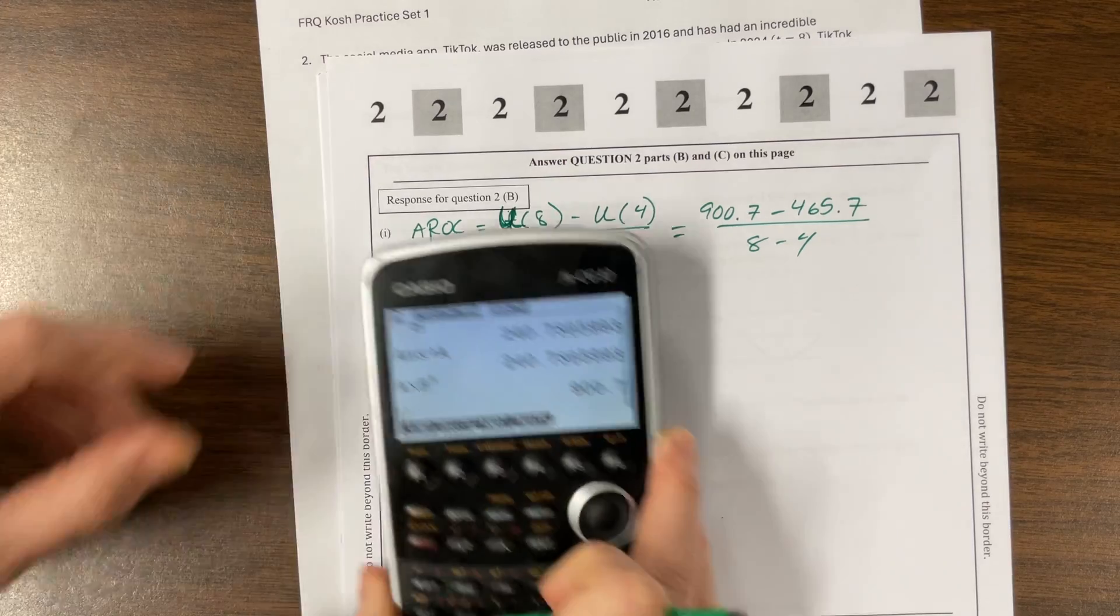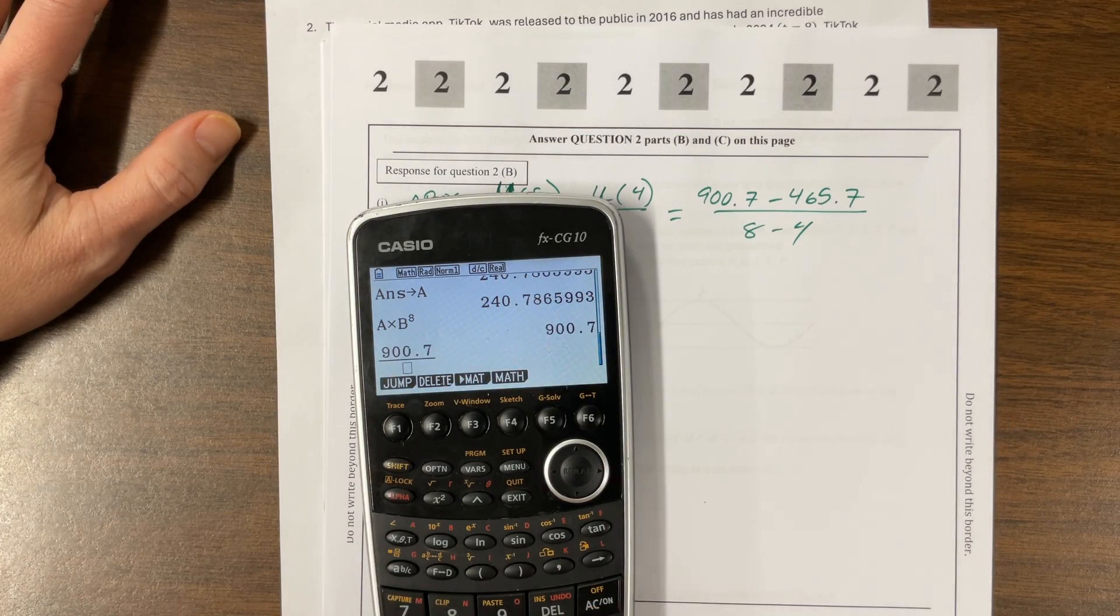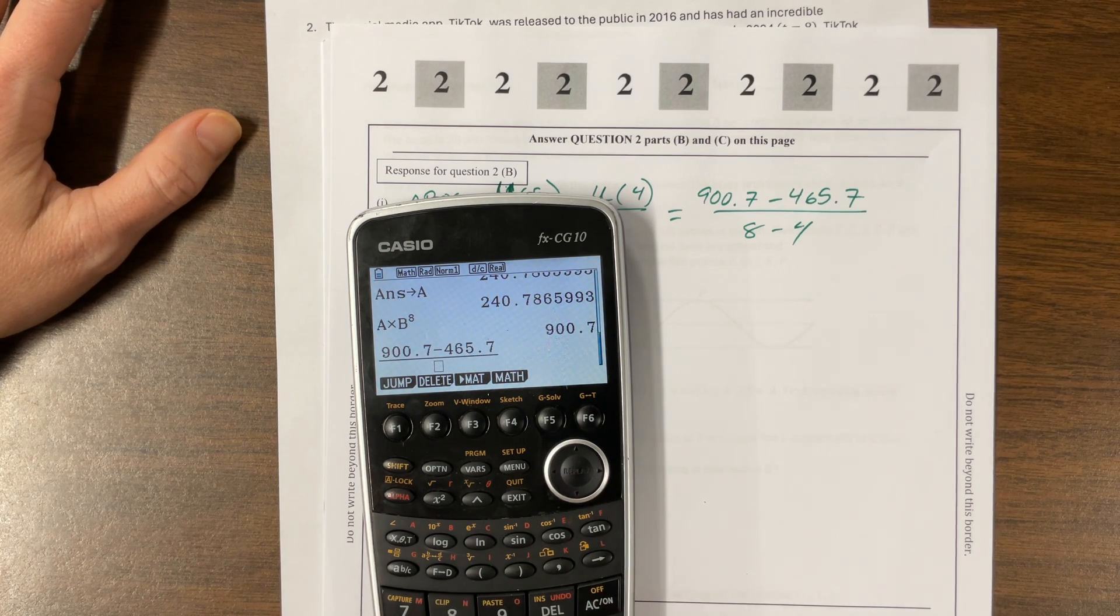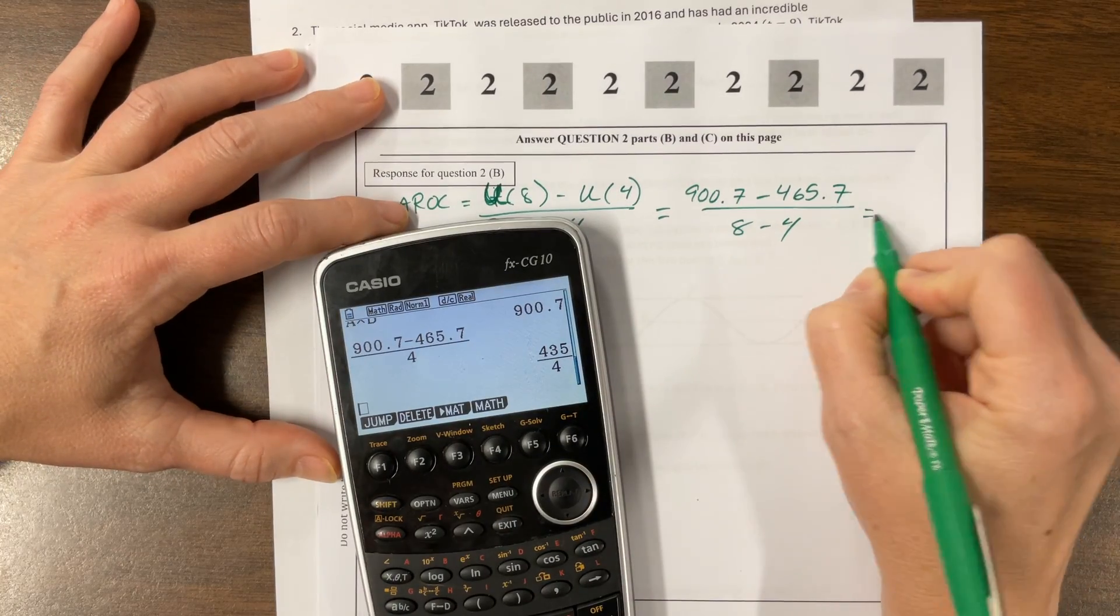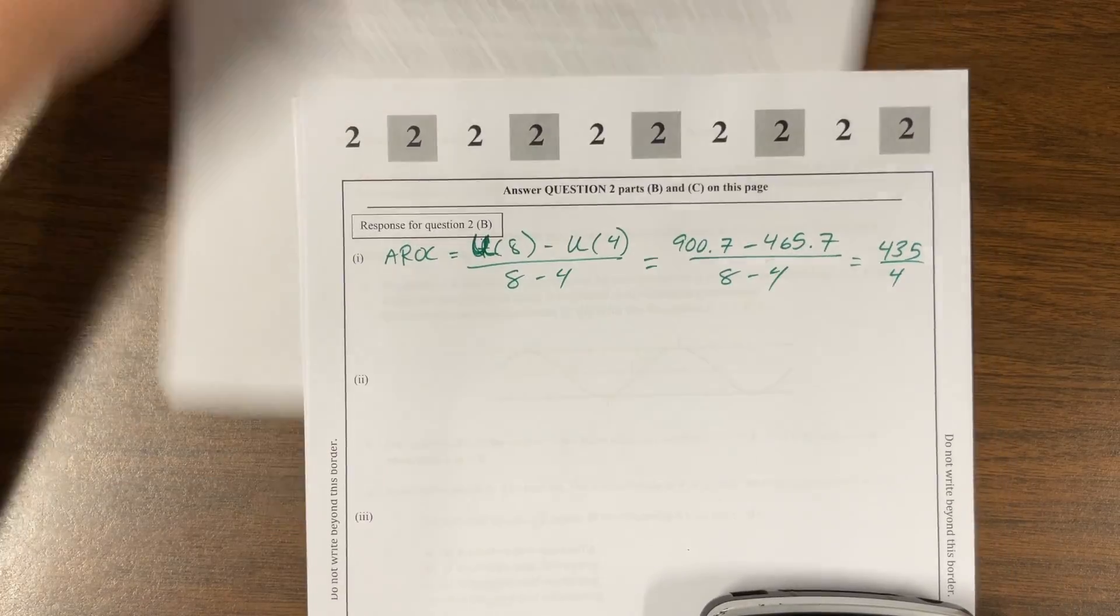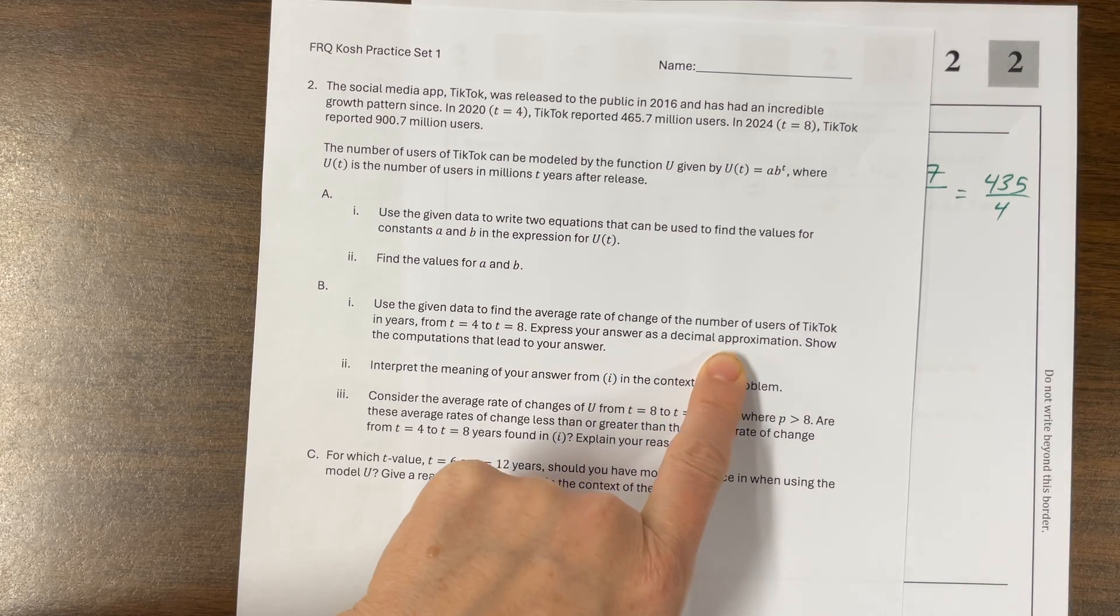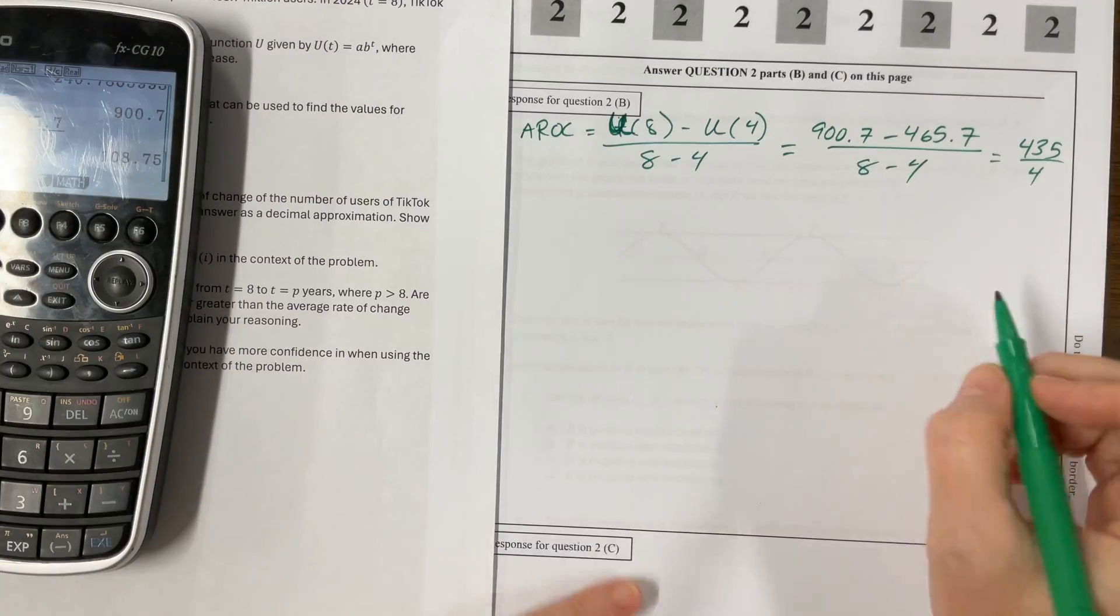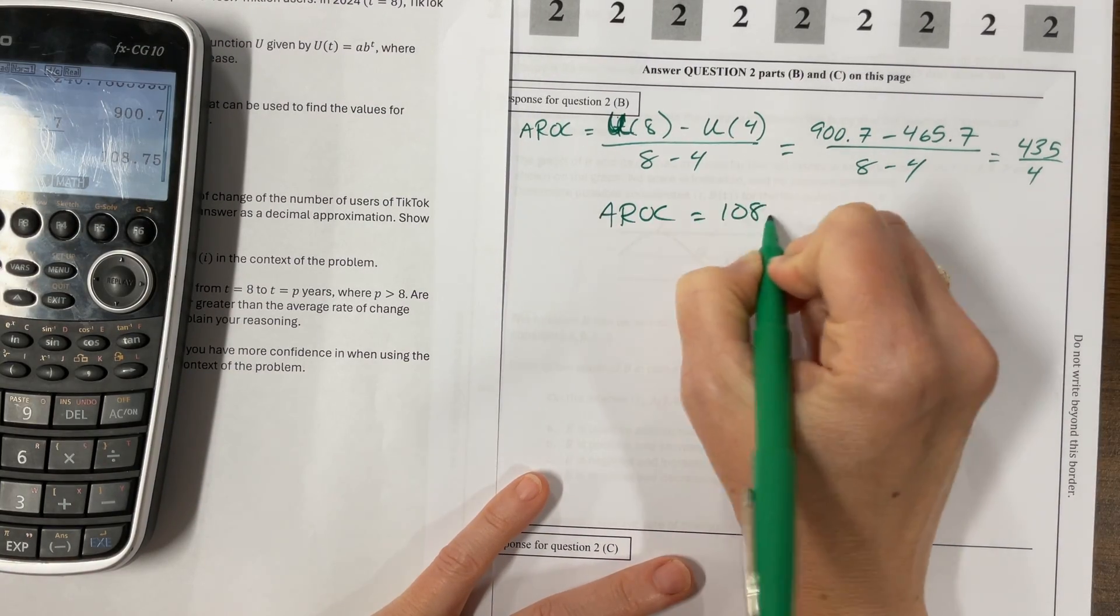At this point, I'm going to grab a calculator and say 900.7 minus 465.7 all over four. So this is equal to 435 over four, but what did they ask us to do? We got to make sure we answer the question they ask. Express your answer as a decimal approximation. So the average rate of change is equal to 108.75.